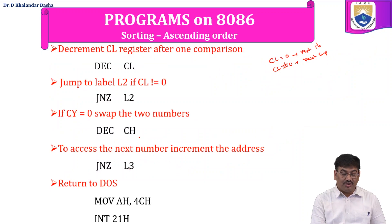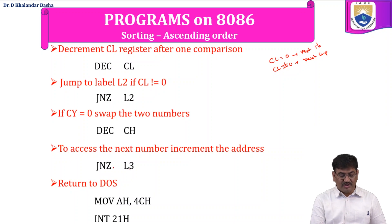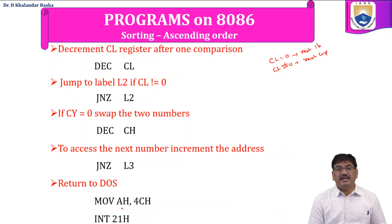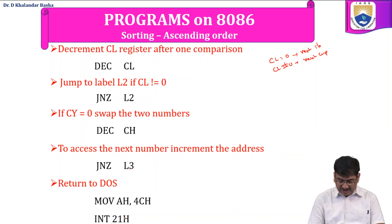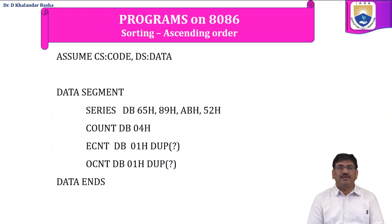Once CH equals 0, the JNZ condition fails and the program proceeds to the termination instruction. To return to the DOS prompt, load 4Ch into AH and execute INT 21H. This completes the program for sorting the given series in ascending order.